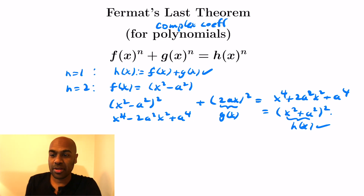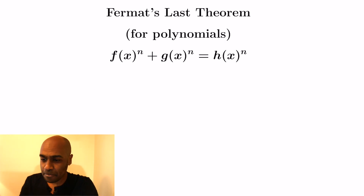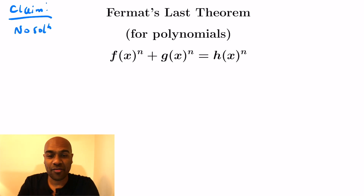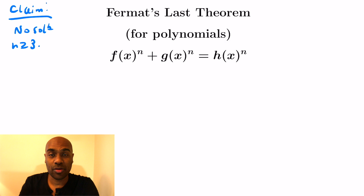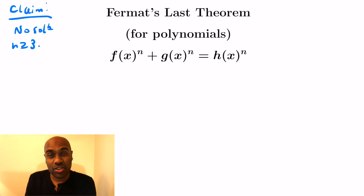Remembering that we're working with polynomials over the complex numbers, the question is what happens for larger n. Our claim is that, just like in Fermat's Last Theorem, there's no solution when n is a positive integer at least 3. We can't find polynomials f, g, and h with no common factors satisfying f^n + g^n = h^n. If we assume no polynomial divides any pair of them, we'll show there's no solution whatsoever. It's surprising that even though for integers this is really difficult, for complex polynomials it's not that bad.